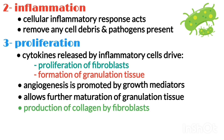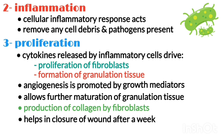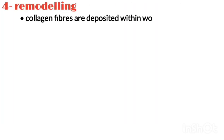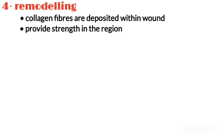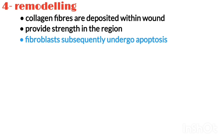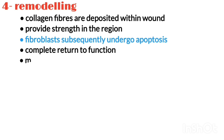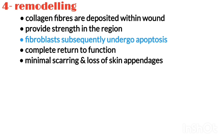The production of collagen by fibroblasts allows for closure of the wound after around a week. Number four is remodeling. Collagen fibers are deposited within the wound to provide strength in the region, with the fibroblasts subsequently undergoing apoptosis. The end result of healing by primary intention is a complete return to function, with minimal scarring and loss of skin appendages.